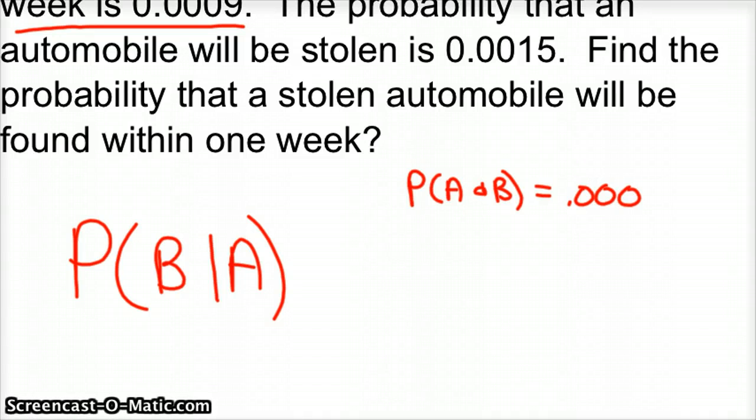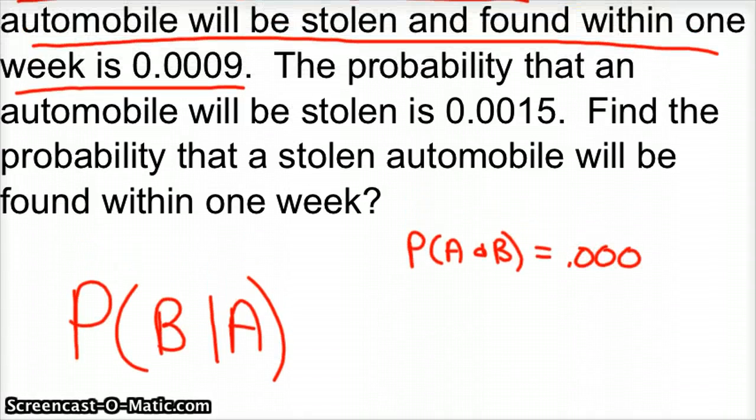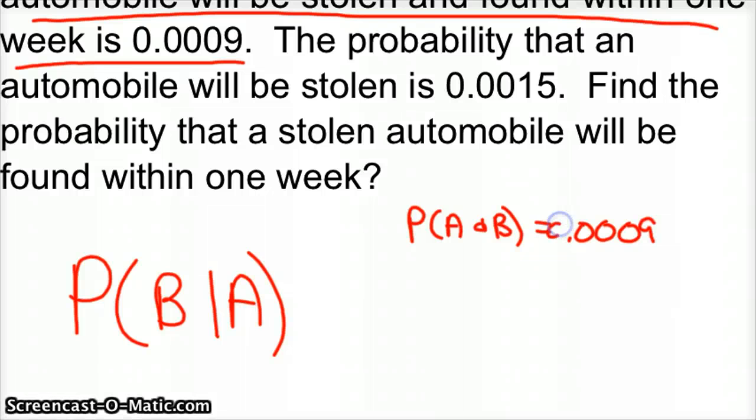we know the probability of A and B is 0.0009. I think maybe one more zero. Nope, that's it. Three zeros and a nine.